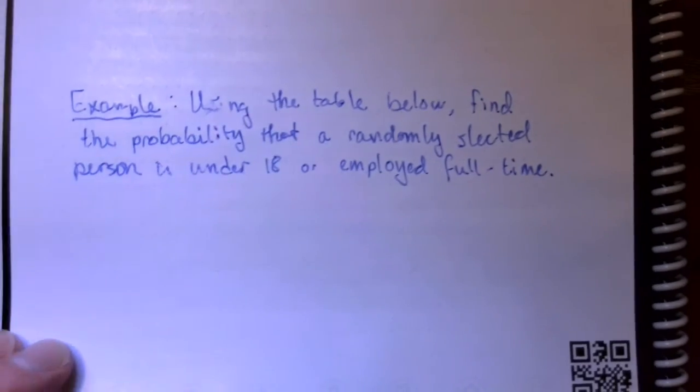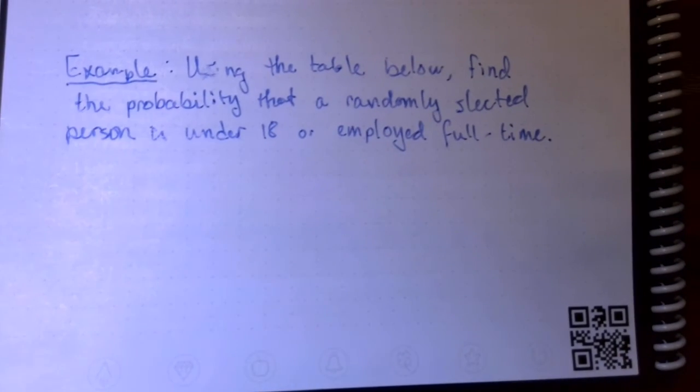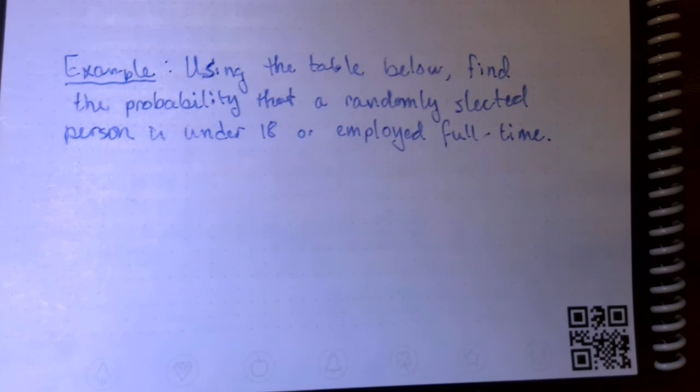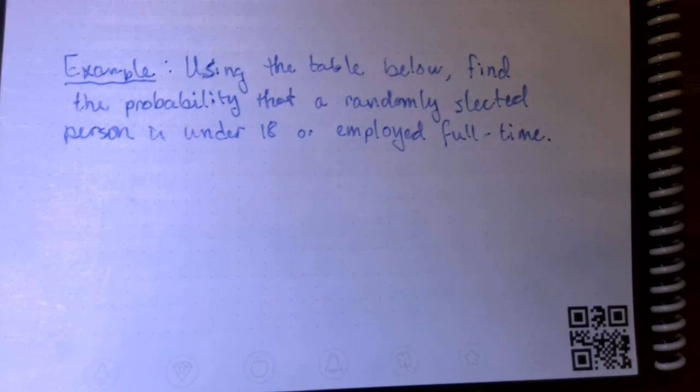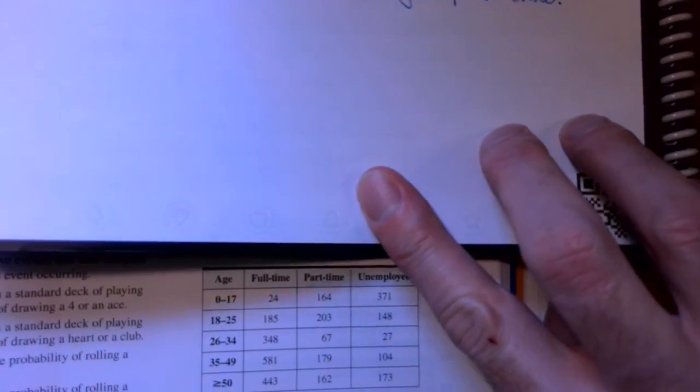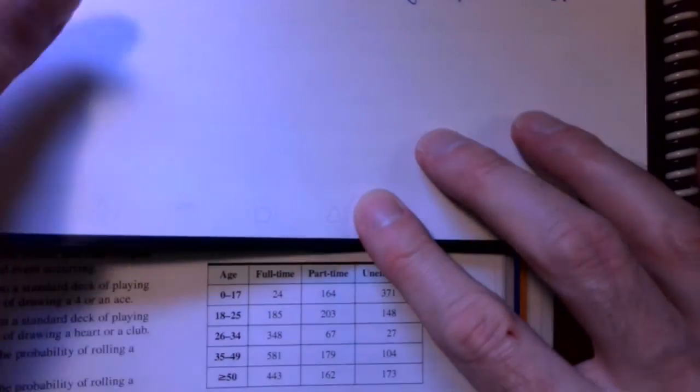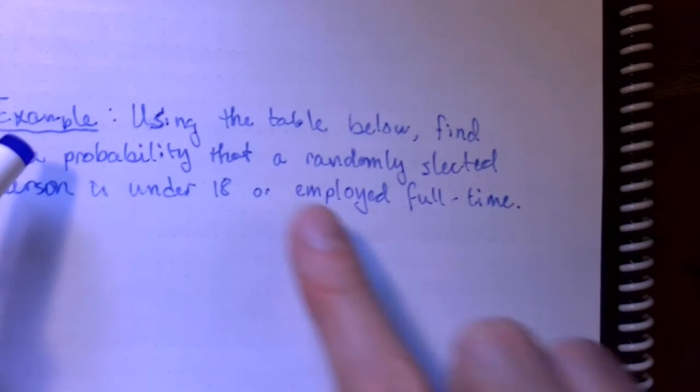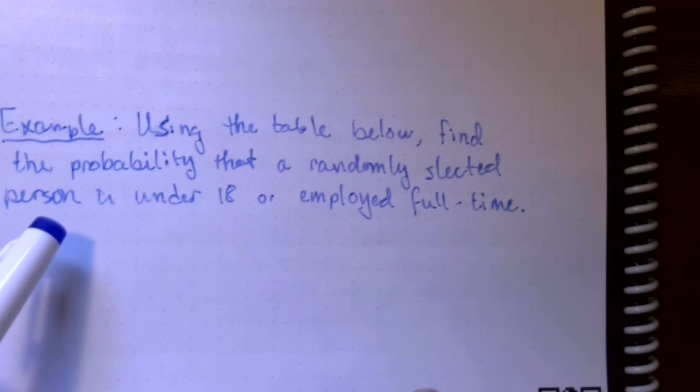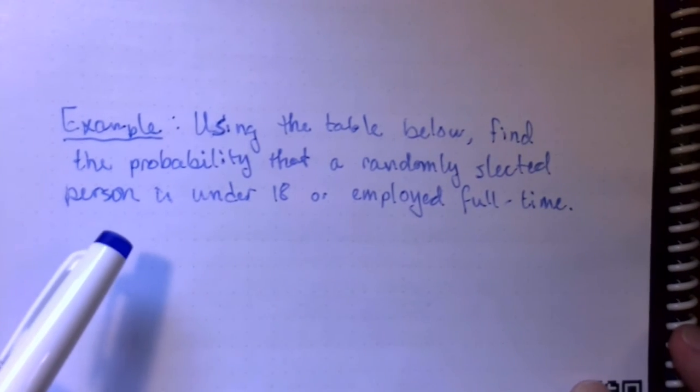One more example. A while back, we talked about probability with tables. I looked at an example out of our textbook here. So, let me bring that out. We're looking at this table right here. We're imagining it's a survey. Using the table below, find the probability that a randomly selected person is under 18 or employed full-time.